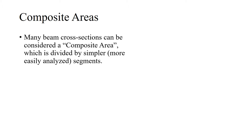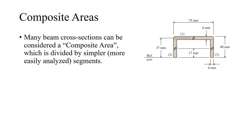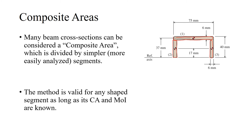Many shapes can be divided into simpler segments that are more easily analyzed. If we look at the channel, we can divide it into three rectangular segments. Each segment has a well-defined centroid and a known moment of inertia. This method of breaking a composite area into well-defined segments is valid for any shape, as long as its centroidal axis and the moment of inertia of each segment are known.